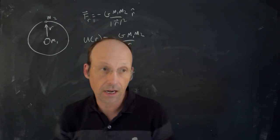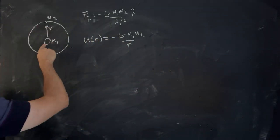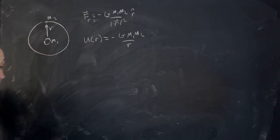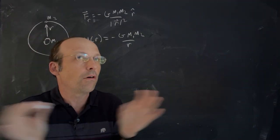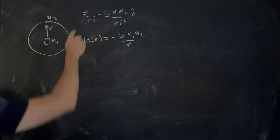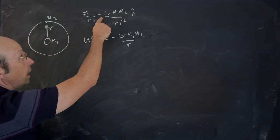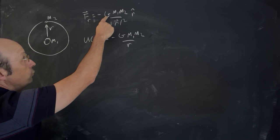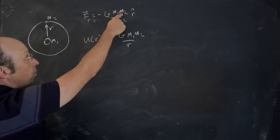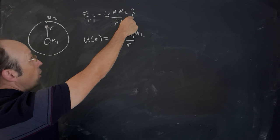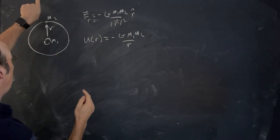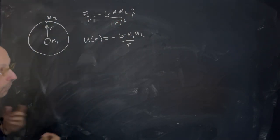Imagine I have an object of mass m2 orbiting another object of mass m1. This object m1 is very heavy so it doesn't move. We know the gravitational force, written as a vector, is negative g, the gravitational constant, the product of their masses divided by the distance between them squared, and then that r hat. That r hat is pointing that way so the negative means the force is pointing that way, which we knew.